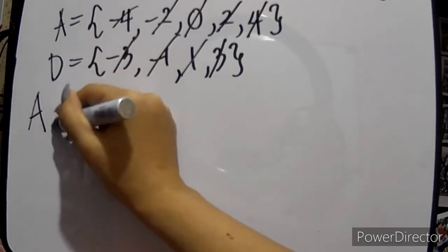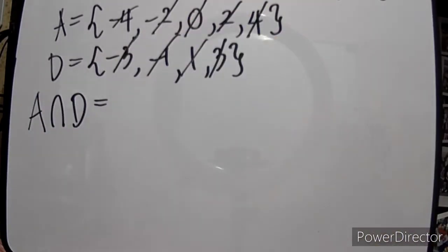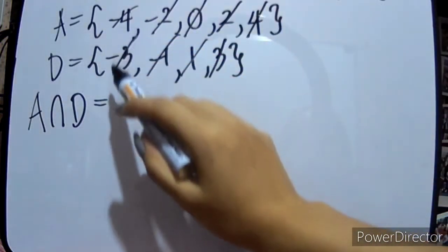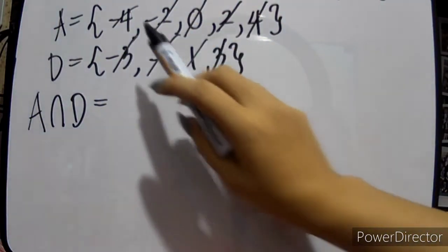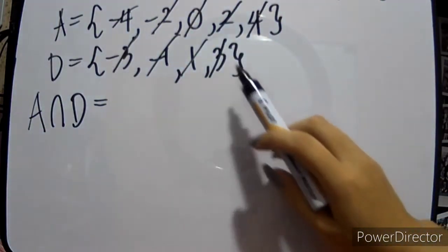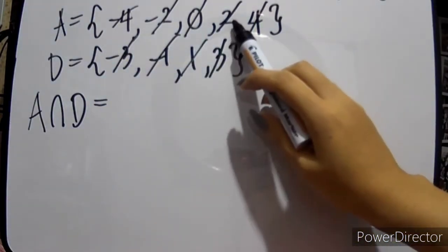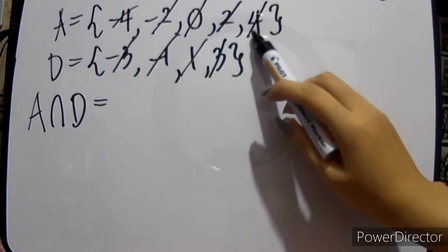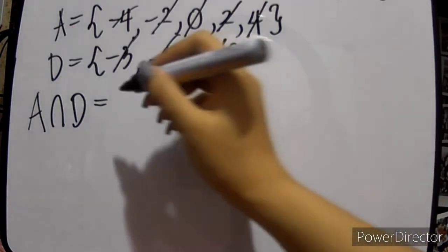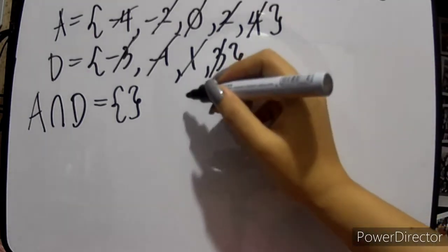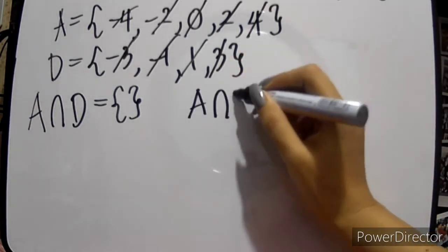Now let's get the intersection. When we say intersection, you get the common elements. Checking A against D: negative 4 is not in D, negative 2 is not in D, 0 is not in D, 2 is not in D, and 4 is not in D. So there is no common element — A intersection D is the empty set.